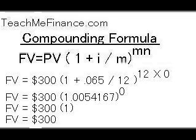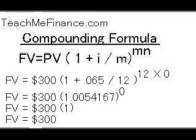M is still 12 because it's compounded monthly, and N is 0, which means 0 years. You multiply 0 times 12 and get 0. Then you have 1.0054167 to the power of 0. Anything to the power of 0 is 1, so 1.0054167 to the power of 0 just becomes 1. So you multiply 300 times 1, which comes out to 300.